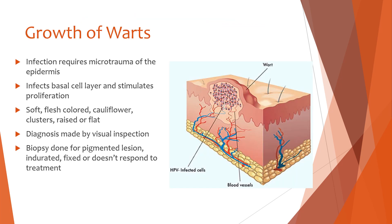The initial infection requires microtrauma of the epidermis, or skin. The virus infects the basal cell layer and stimulates proliferation or growth of cells, resulting in soft, flesh-colored cauliflower clusters of warts. The diagnosis is typically made through visual inspection. Biopsies are performed for pigmented lesions, or a lesion that is indurated, fixed, or not responding to treatment.